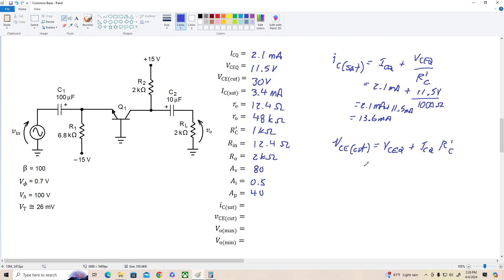So that VCEQ cutoff, our VCEQ was 11.5 volts plus 2.1 milliamps times 1,000 ohms is 11.5 volts plus 2.1 volts. So we've got 11, 12, 13.6 volts for VCEQ cutoff. Let me write those over here. 13.6 milliamps and 13.6 volts. Now I'm going to bring over the DC and AC load lines.